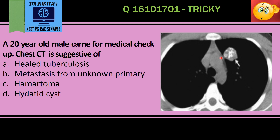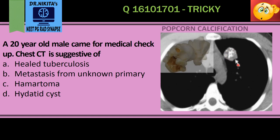Therefore it's a non-contrast CT of the chest. Here we have a lesion in the left lung which has a white appearance on a non-contrast CT. White on a non-contrast CT means calcification. The calcification in this lesion is very much like a popcorn, so it's a popcorn calcification in a lung lesion.